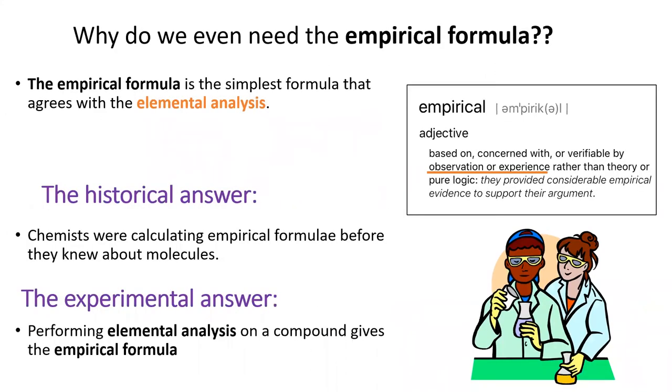Since the empirical formula can't even tell us how many atoms are in a molecule, you might wonder why we have an empirical formula at all. The word empirical means from observation or experiment. There is a technique called elemental analysis which will tell us the mass percent of each element in a compound. We can use this mass percent to calculate the empirical formula.